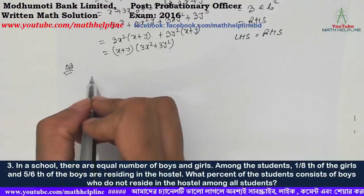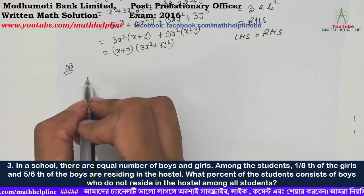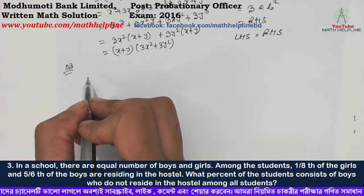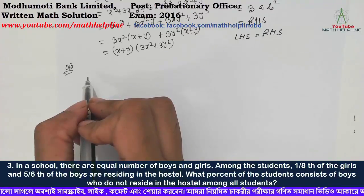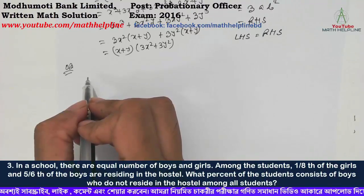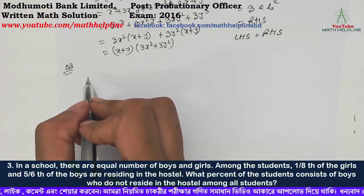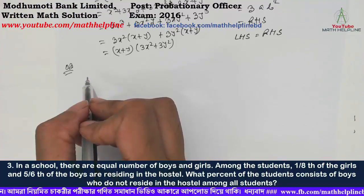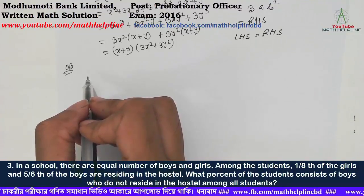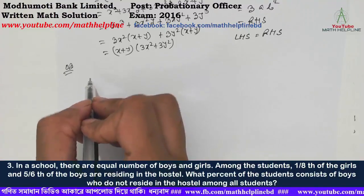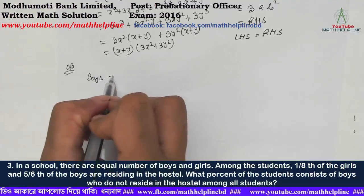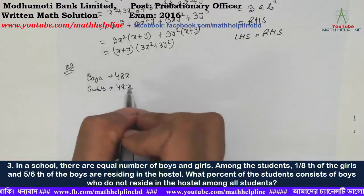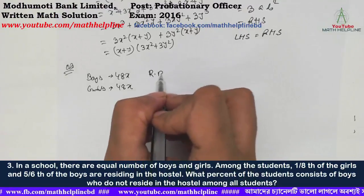In a school there are equal numbers of boys and girls among the students. 1/8th of the girls and 5/6th of the boys are residing in the hostel. What percentage of the students consists of boys who do not reside in the hostel among all the students? This means among the students, 1/8th of the girls are at the hostel, so those who do not reside in the hostel...